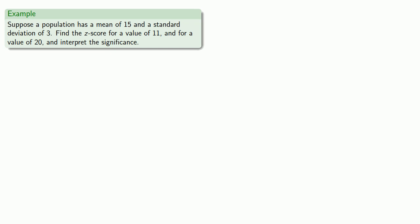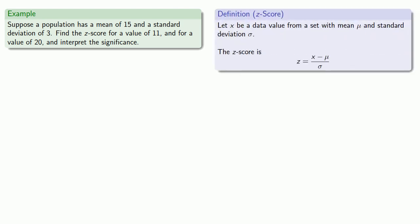Again, definitions are the whole of mathematics, all else is commentary, so let's bring in that definition. The z-score for a value of 11 is 11 minus the mean over the standard deviation, and we'll calculate that value as minus 4 thirds.